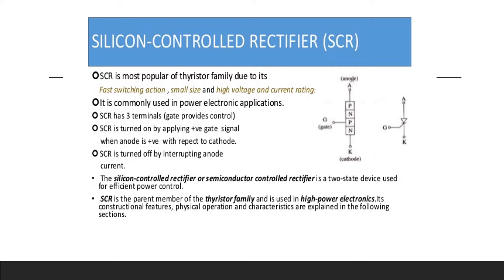The semiconductor controlled rectifier is useful in many applications such as power switching and various control circuits. The device can handle currents from a few milliamperes to hundreds of amperes. Since it can be turned on externally, the SCR can be used to regulate the amount of power delivered to a load by passing current only during selected portions of the line cycle. A common example of this application is the light dimmer switch used in many homes.